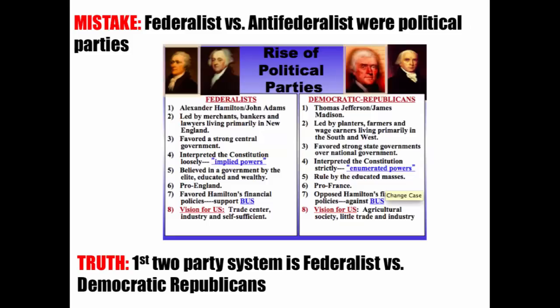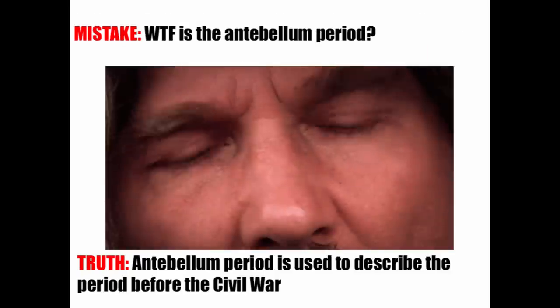The Federalists versus the Anti-Federalists were political parties — nope. The first two-party system is Federalists versus Democratic-Republicans in the 1790s. The Anti-Federalists and Federalists represent the two sides of the debate over ratification — Federalists were for the Constitution, Anti-Federalists were against ratification. The first actual two-party system isn't until the 1790s when debates over Hamilton's plan led to the rise of political parties. Many Anti-Federalists became Democratic-Republicans, but Anti-Federalists were not a political party.